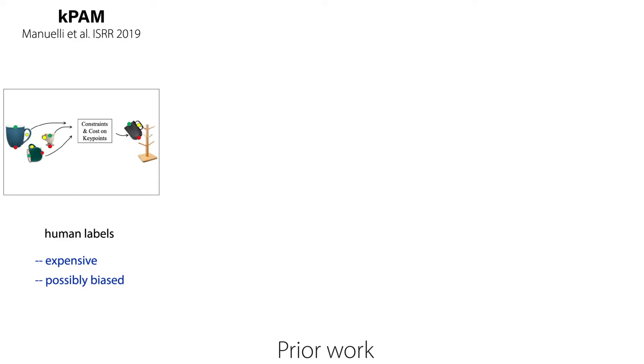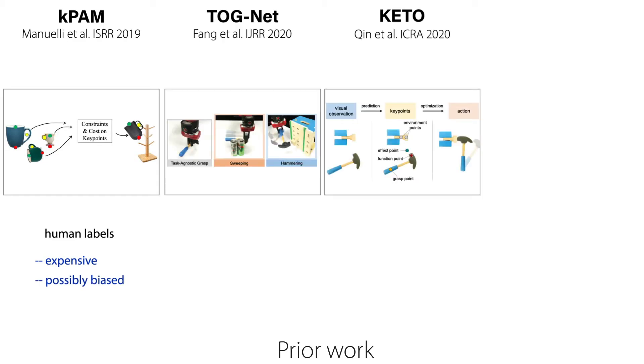Discovering realizable action possibilities is a hard problem because the space of possible actions is so large. Previous methods work around this issue by using human labels, which are expensive and can introduce human biases, or by constraining the space of possible manipulations with motion primitives or an optimization problem under predefined constraints. The problem with this is that limiting the actions we try naturally limits the action possibilities we can discover, so limiting manipulation limits affordance discovery.